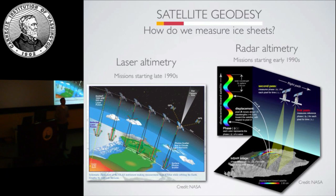There have been a couple of ways that we measure these ice sheets. Two of the big techniques are laser and radar altimetry, which began to come online in the early to mid-1990s. Basically, as the satellite flies over an ice sheet, it sends down a laser and measures that reflection, so the observation you get is an elevation change of that ice sheet.